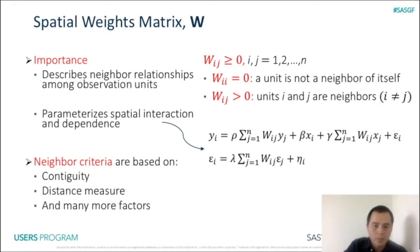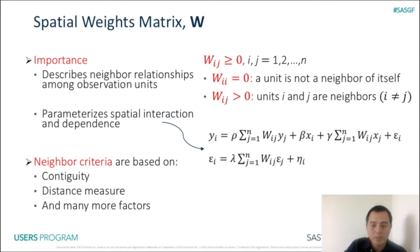As already mentioned, the W matrix describes neighbor relationships among observation units. Generally speaking, W is an n-by-n matrix with non-negative entries, where n is the number of unique observation units in the data. W_ij, or the ij-th entry of W, is positive if units i and j are neighbors. We use the W matrix to parameterize spatial interaction and dependence.